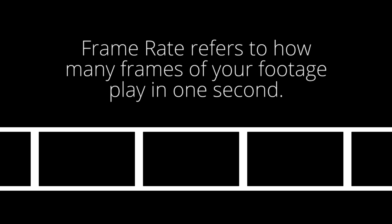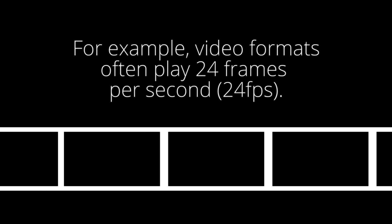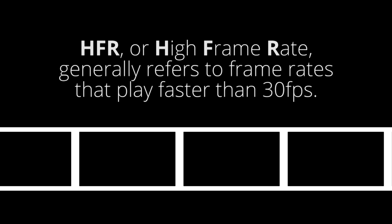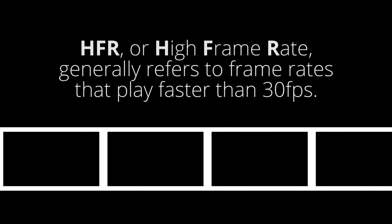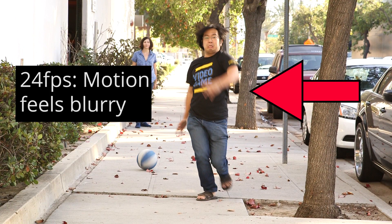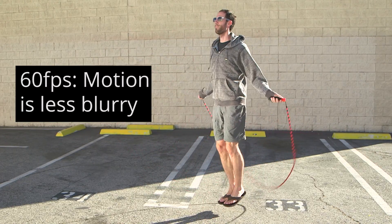Frame rate refers to how many frames of your footage play in one second. For example, video formats often play 24 frames per second. HFR, or high frame rate, generally refers to frame rates that play faster than 30 frames per second. Watch this 24 frames per second footage — as Freddie's running, you'll see his hands are moving and they're blurry at 24 frames per second. Now watch this 60 frames per second footage. The jump rope is moving and very crisp and clear at 60 frames per second.